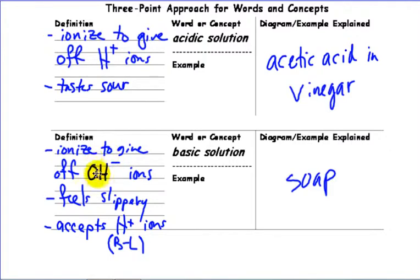Basic solutions ionize to give off OH minus ions is one way we can think of it. Also feels slippery, accepts H pluses in the Bronsted-Lowry definition, etc. Many different ways we can define that. And soap is an example of a basic solution.